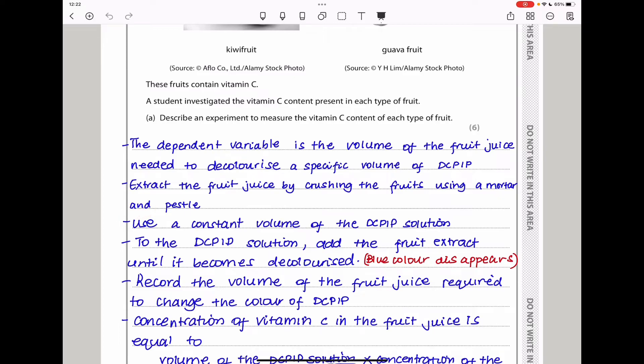You put the DCPIP in test tubes. Let's assume it's going to be 5 centimeters. Then you will add the fruit juice to each and then see what volume of fruit juice is going to lead to a color change within the DCPIP solution. That will be the volume you take. We have to use a constant volume of the DCPIP solution.